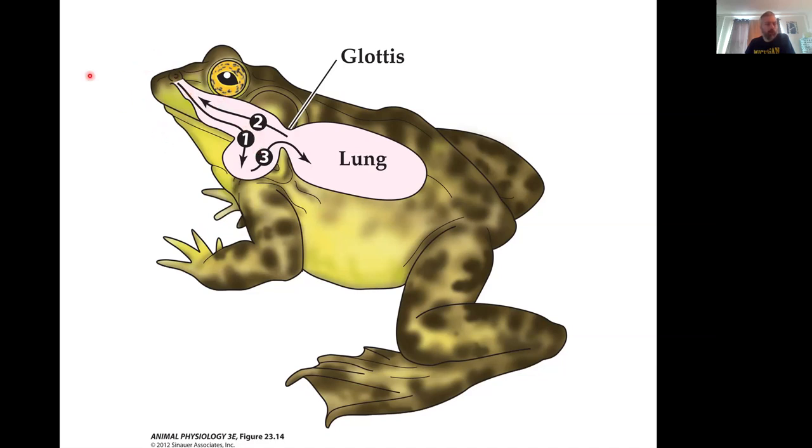So air floods in through the nostril. Frogs aren't mouth breathers, unlike some people. Air comes into the nostril, fills this chamber. Okay. At this point, the glottis is closed. Right?